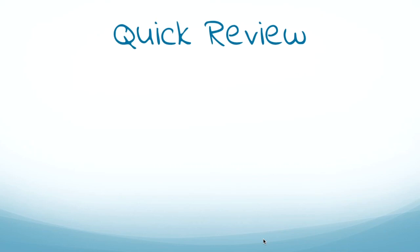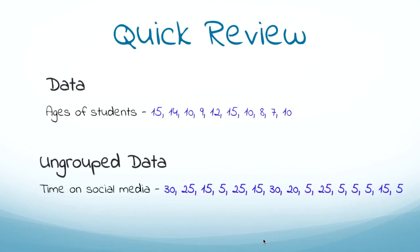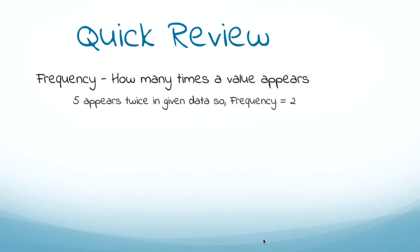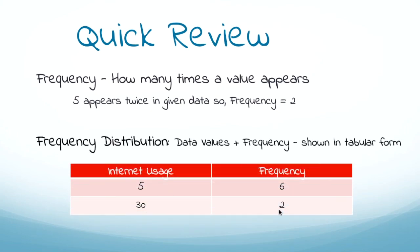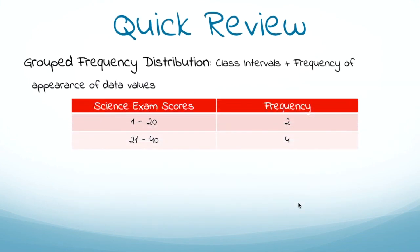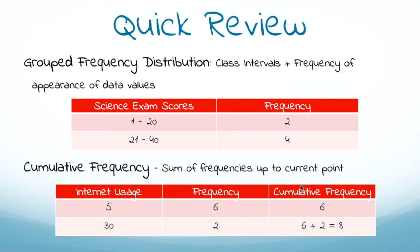Let's do a quick review of what we learned today. We talked about data and ungrouped data, which is in raw form. Then we covered frequency — how many times a data value appears. We discussed frequency distribution in tabular form, grouped frequency distribution with class intervals, and finally cumulative frequency, which gives us the running sum of frequencies up to the current point. We hope you enjoyed this session — see you in the next one!